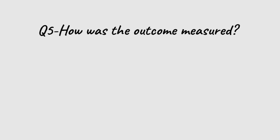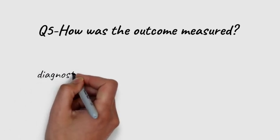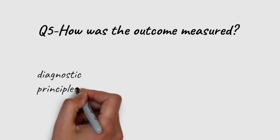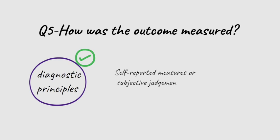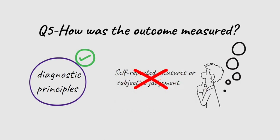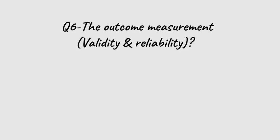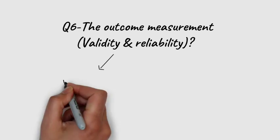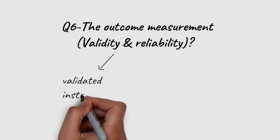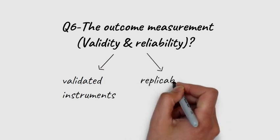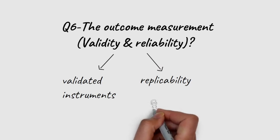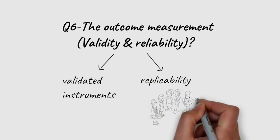The next question is how the outcome was measured. Any outcome or disease should be diagnosed according to established diagnostic principles or definitions. Self-reported measures or subjective judgment would compromise the validity of the study and could result in under- or over-reporting of the outcome. Similarly, details of how the outcome is measured — for example, the use of validated instruments and replicability that includes educated and well-trained staff — are important aspects that need to be appraised to maximize the validity and repeatability of the study.